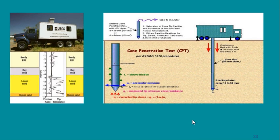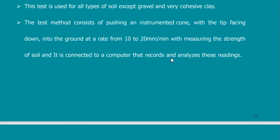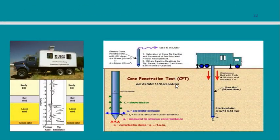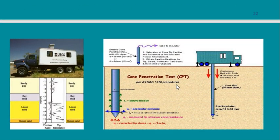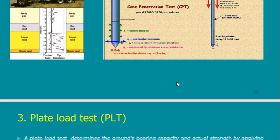The CPT is very good for clay, silt, and any soft soil, while the SPT is very good for sand. So now we know two tests: one for sand and one for clay.